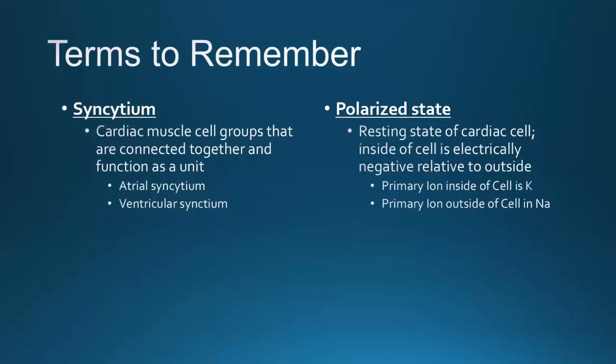Syncytium refers to cardiac muscle cell groups that are connected together and function as a unit — you have your atrial syncytium and your ventricular syncytium. Your atria must contract together and your ventricles must contract together. In the polarized state, the primary intracellular ion is potassium and the primary extracellular ion is sodium.